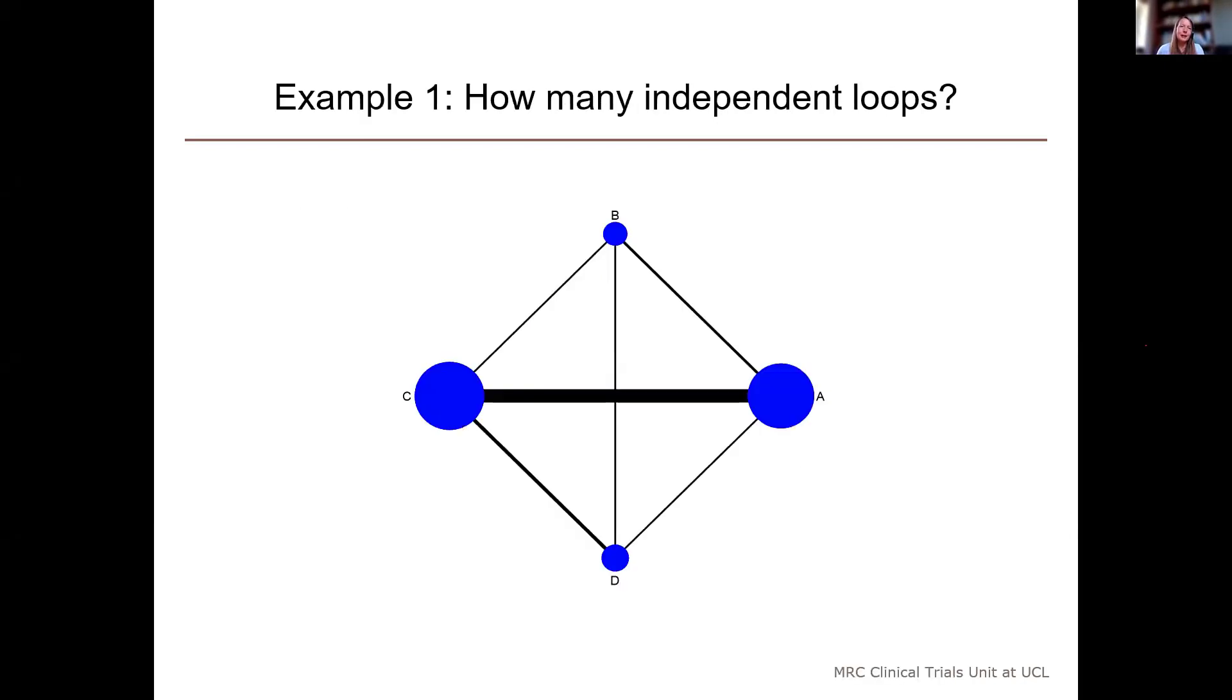Now I'd like to ask you - we're going to run another poll. I'd like you to think about how many independent loops there are in this network, which is similar to the last network but it just has one more edge.